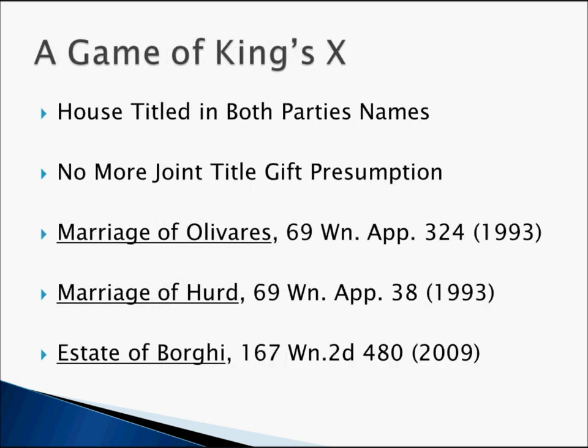I wanted to comment on a case that came out in 2009 — Estate of Borgy — because it really changed the law with respect to how we treat property titled in both parties' names. This was a game of king's x, as the court specifically stated. Pre-Borgy, the cases of Olivars and Heard stood for the proposition that if a person used their separate property to purchase a residence and titled it in both parties' names, there was a joint title gift presumption making it community property. The reasoning was very significant because presumptions were controlling the characterization instead of the actual intent of the person who owned the separate property.